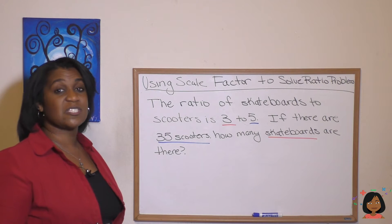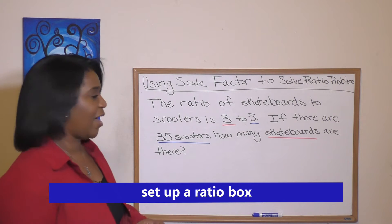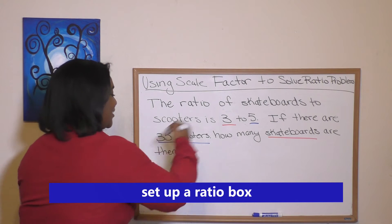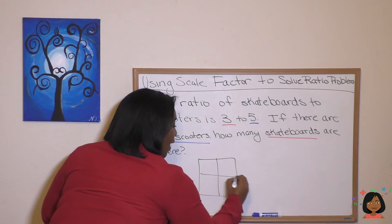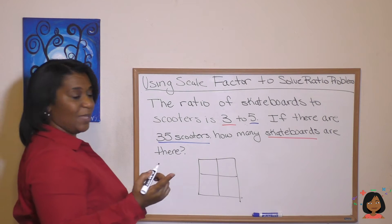The first thing I'm going to instruct you to do is set up what we call a ratio box. Ratio box looks like this. So I'm going to draw a square and divide it into four quadrants.